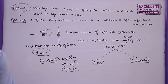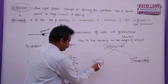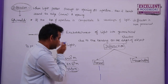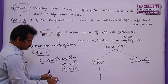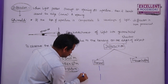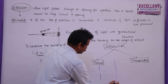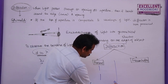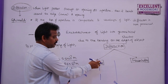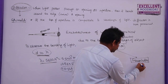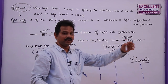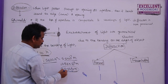In Fresnel diffraction, we have a source and slits. This is the slit opening through which the light is passing. The source is at some finite distance. In Fraunhofer diffraction, both the source and the screen are at infinite distance from the slit. Here 'infinite' means the wavelength of light is very small — in angstroms, that is 10⁻¹⁰ meters.